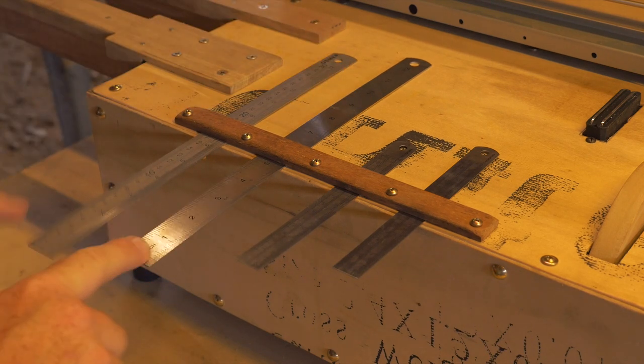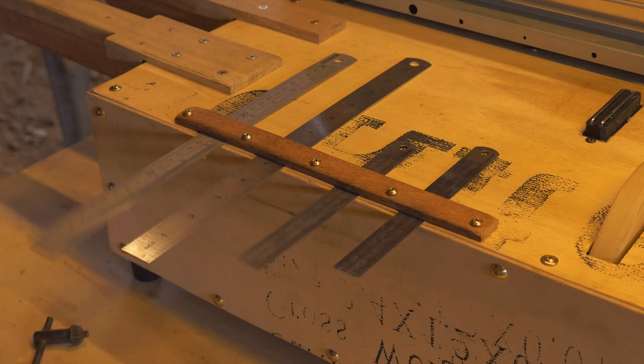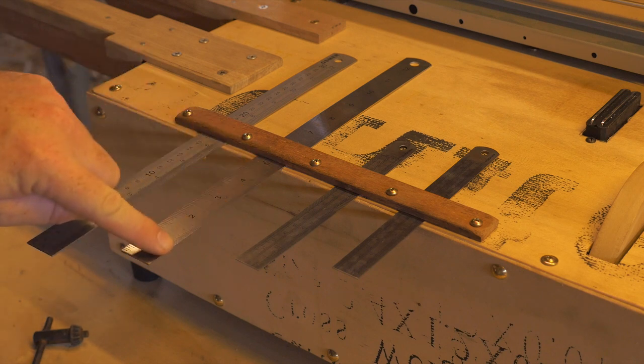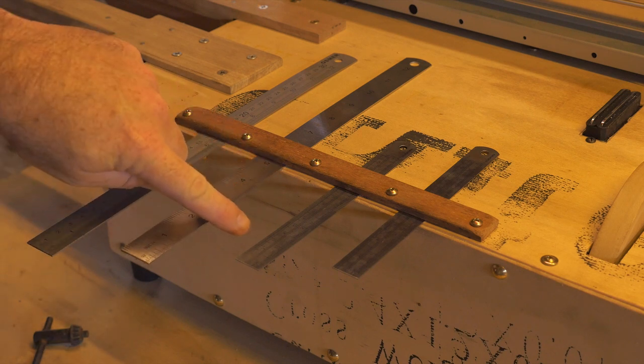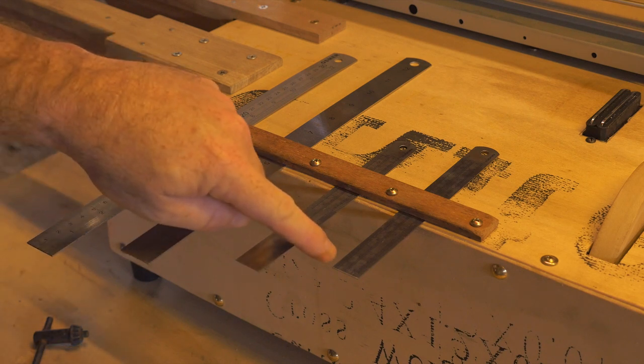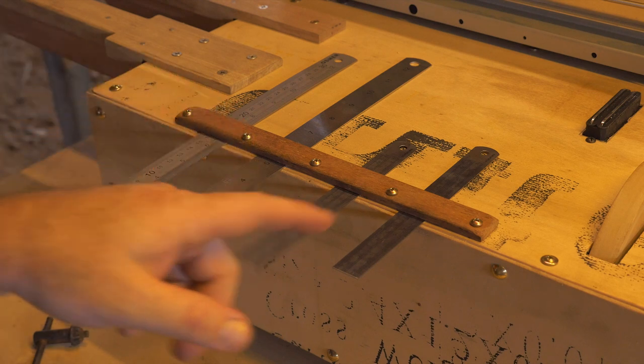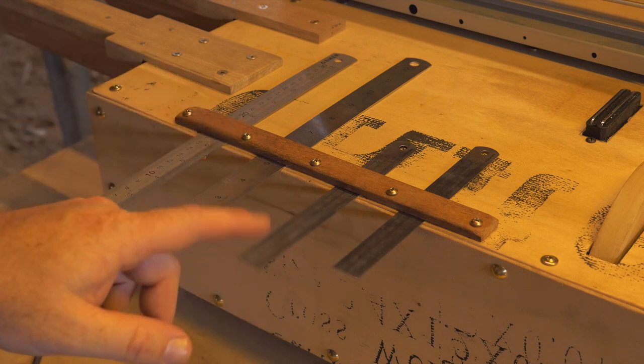One thing we need to be mindful of is because we're going to be using a bow on them, on the leading edge of all of our rulers, we need to use some wet and dry sandpaper. That's fine sandpaper. We need to sand off those edges so it's not too sharp for our bow that we'll be using to make the sounds from them.